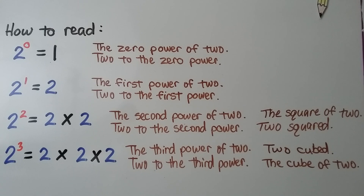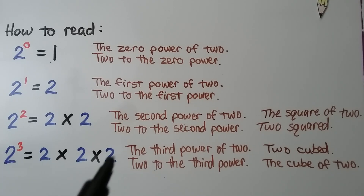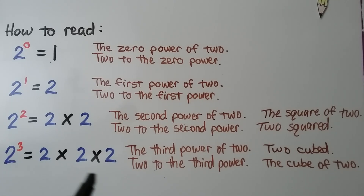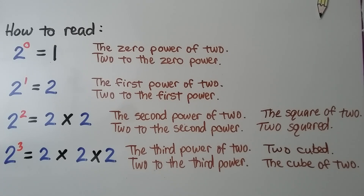If we have a 2 with a 3 exponent, then we have 3 factors of 2. That would be 2 times 2 is 4, times 2 is 8 — that equals 8. It can be read as the 3rd power of 2 or 2 to the 3rd power. We can also read it as 2 cubed or the cube of 2, and I'll explain that coming up.